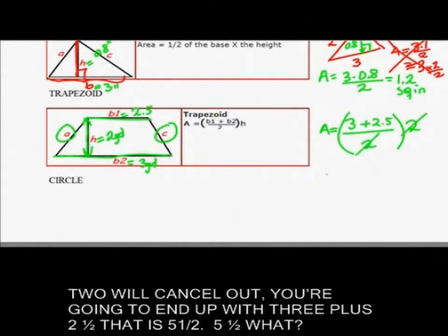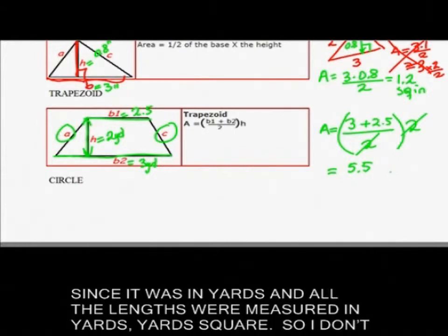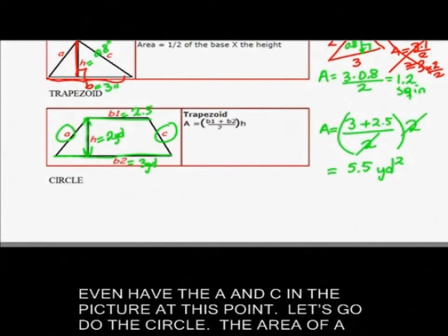So these two will cancel out. You're going to end up with 3 plus 2.5, that is 5.5, 5.5 yards since it was in yards and all the lengths were measured in yards, yard square. So I don't even have the A and C in the picture at this point.